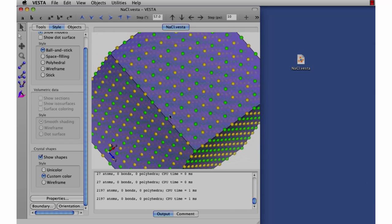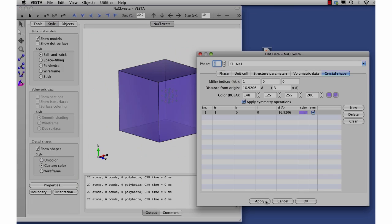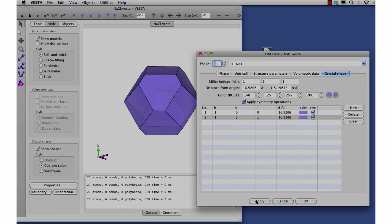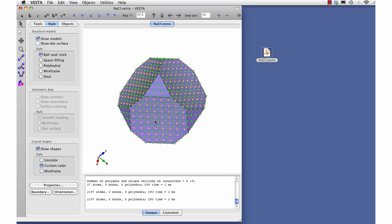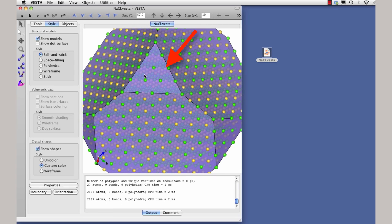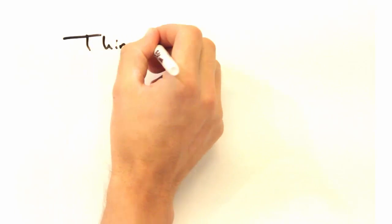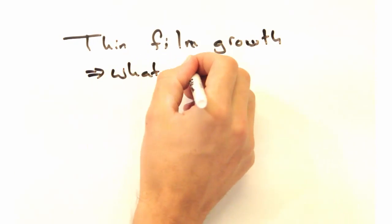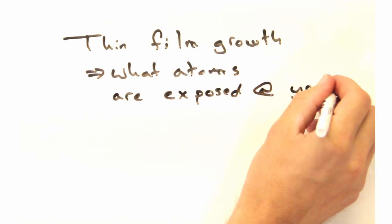It's rare for a crystal to have just one low energy face. Let's add a 1-1-1 face that truncates this cube. Once again, we can see what atoms are at the surface. This sort of information is pretty important for thin film growth, since you want to know what atoms are exposed at your surface.